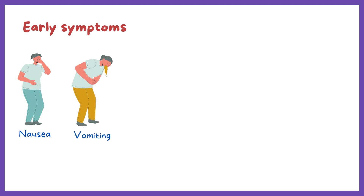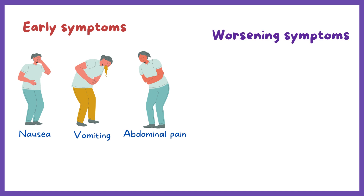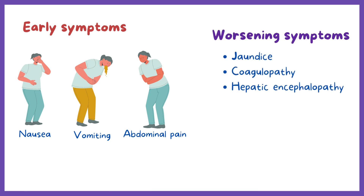Early symptoms of toxicity are nonspecific and include nausea, vomiting, and abdominal pain. But as the liver injury progresses, symptoms worsen and individuals may develop jaundice, coagulopathy, hepatic encephalopathy, and acute renal failure.